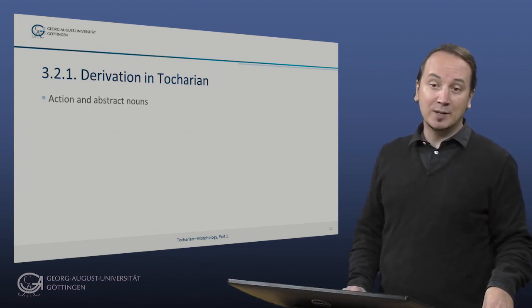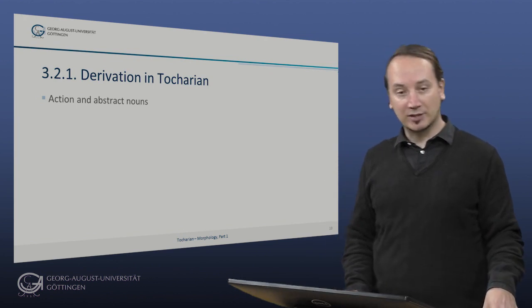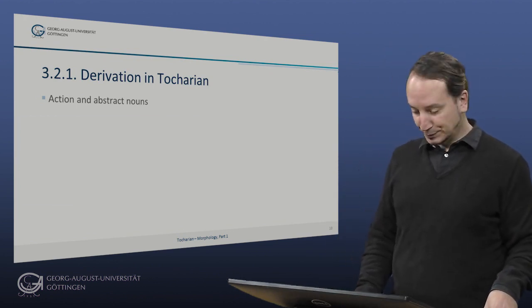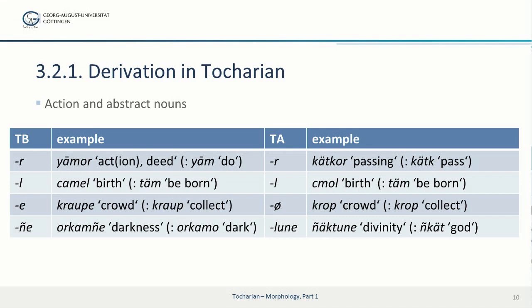Here are some examples of productive action and abstract noun formations. We have very productive R-action nouns, such as 'jamor', literally an action noun meaning action or deed, and 'kütkor' meaning passing, from the root 'küt' meaning to pass. Then we have L-abstract nouns or action nouns, like 'jamel' meaning birth, derived from the root 'tüm' meaning to be born, with its Tocharian A equivalent.